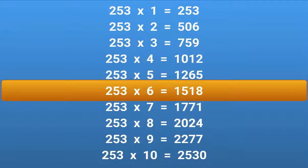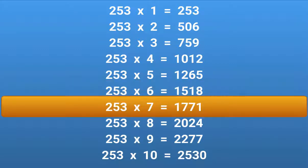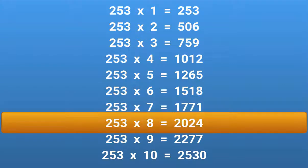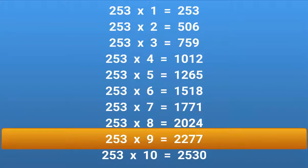253 × 7 = 1771. 253 × 8 = 2024. 253 × 9 = 2277. 253 × 10 = 2530.